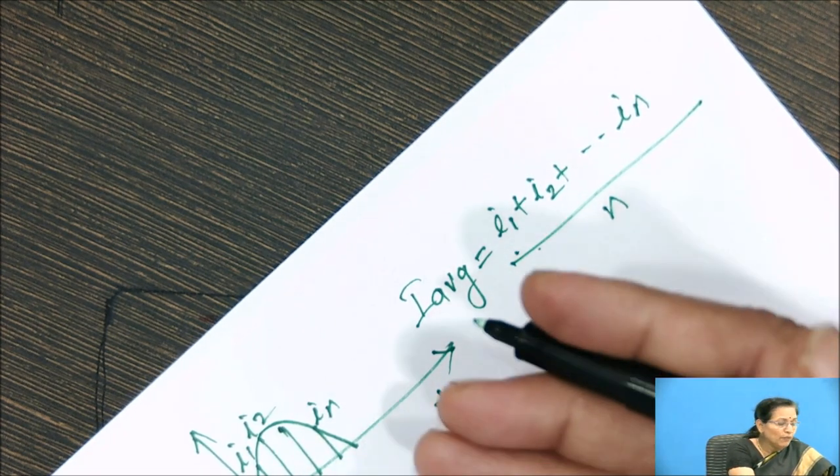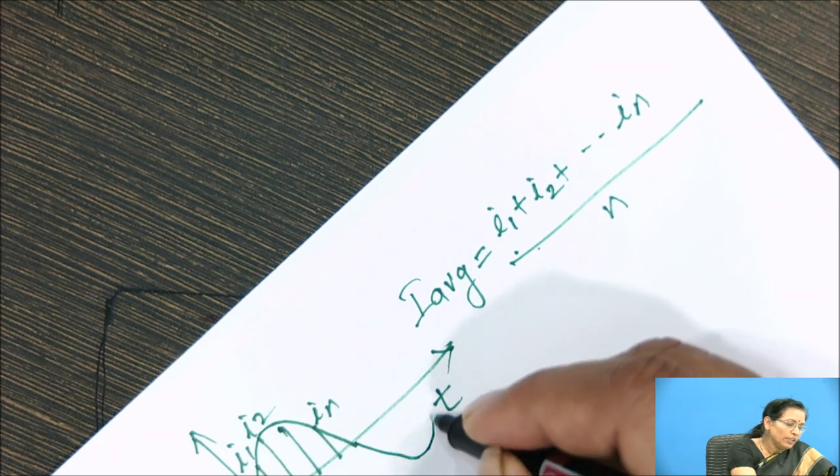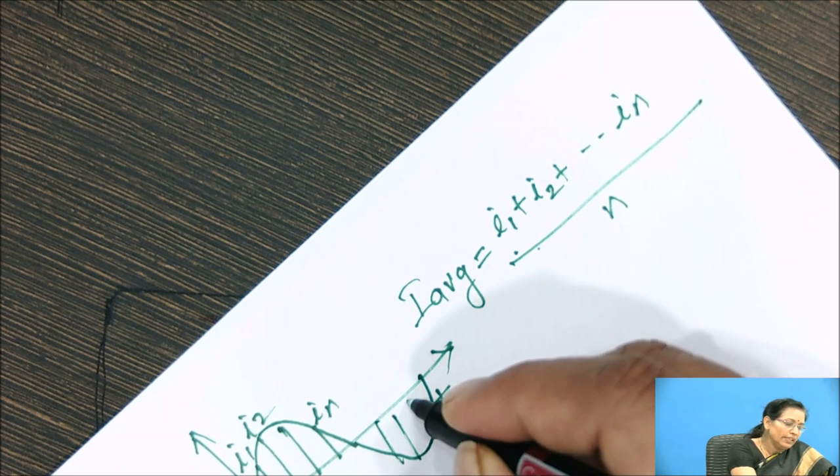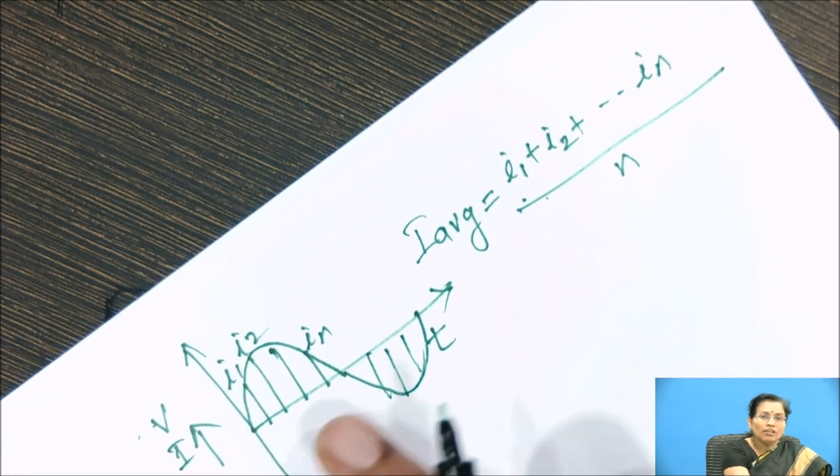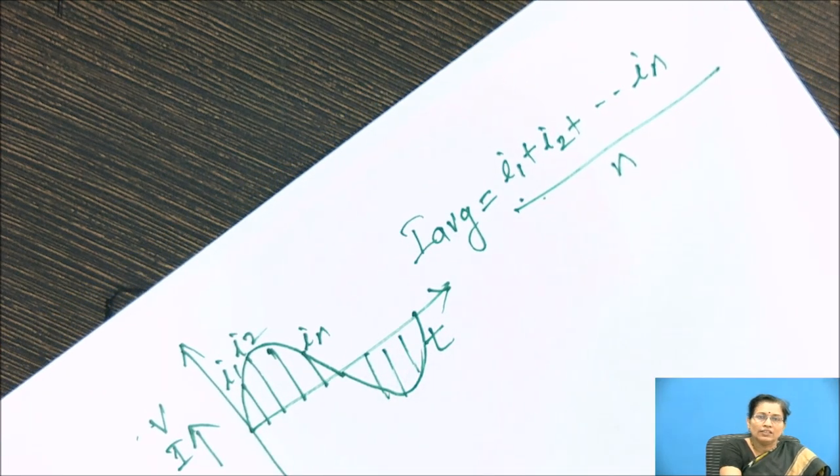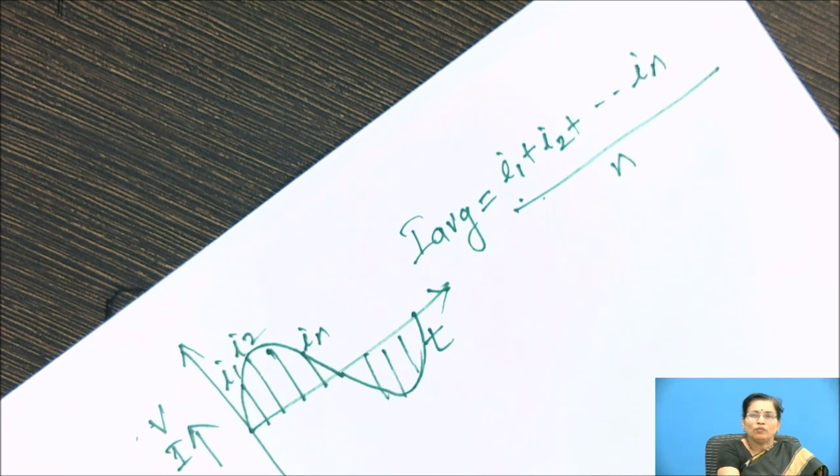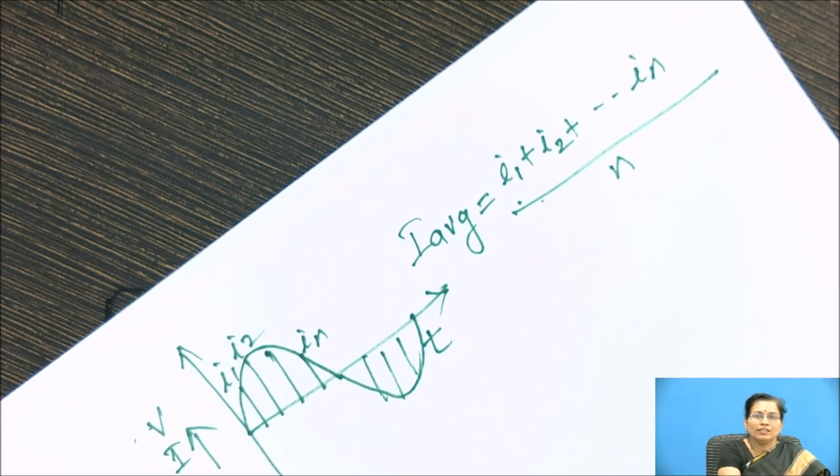But if we calculate the average of negative cycle, that will be negative of that half cycle. So total average of this cycle is zero. So average value for whole AC cycle is zero.